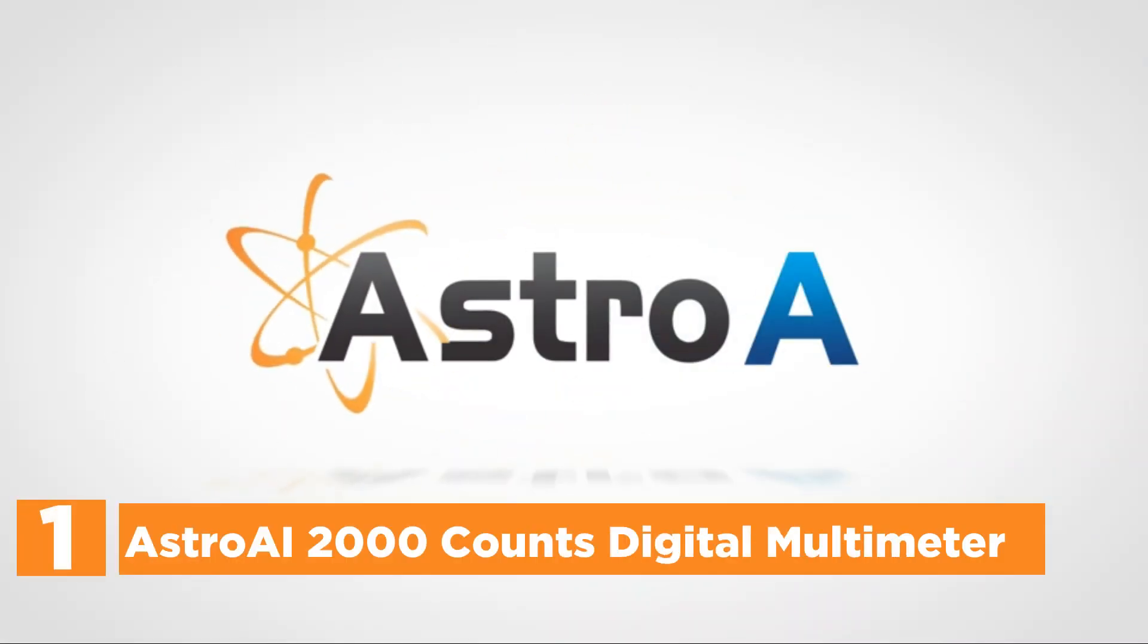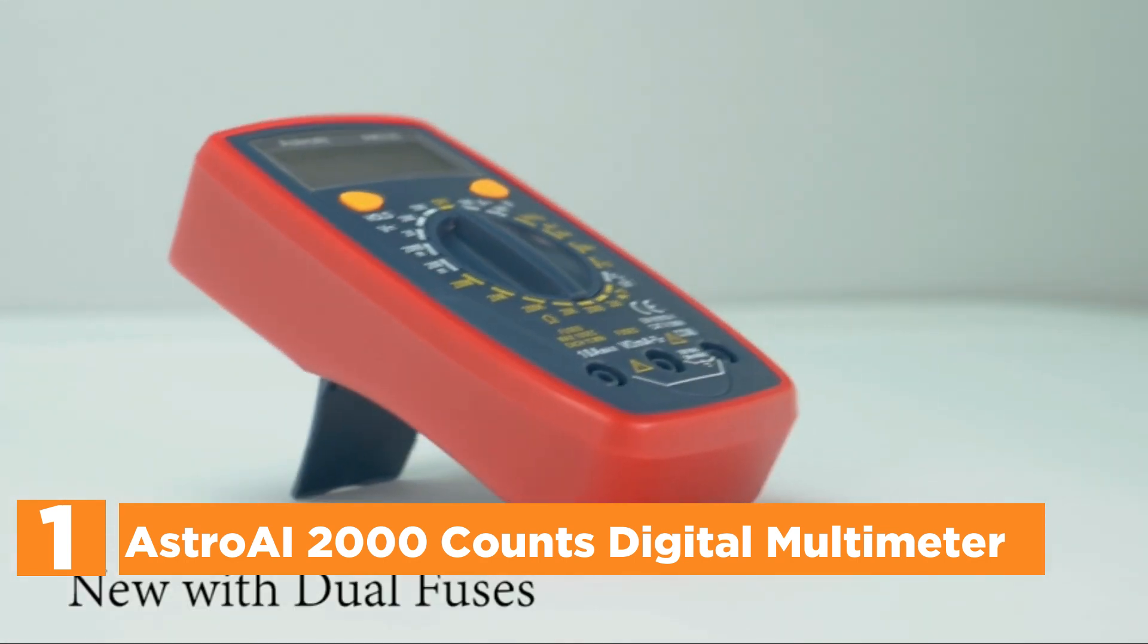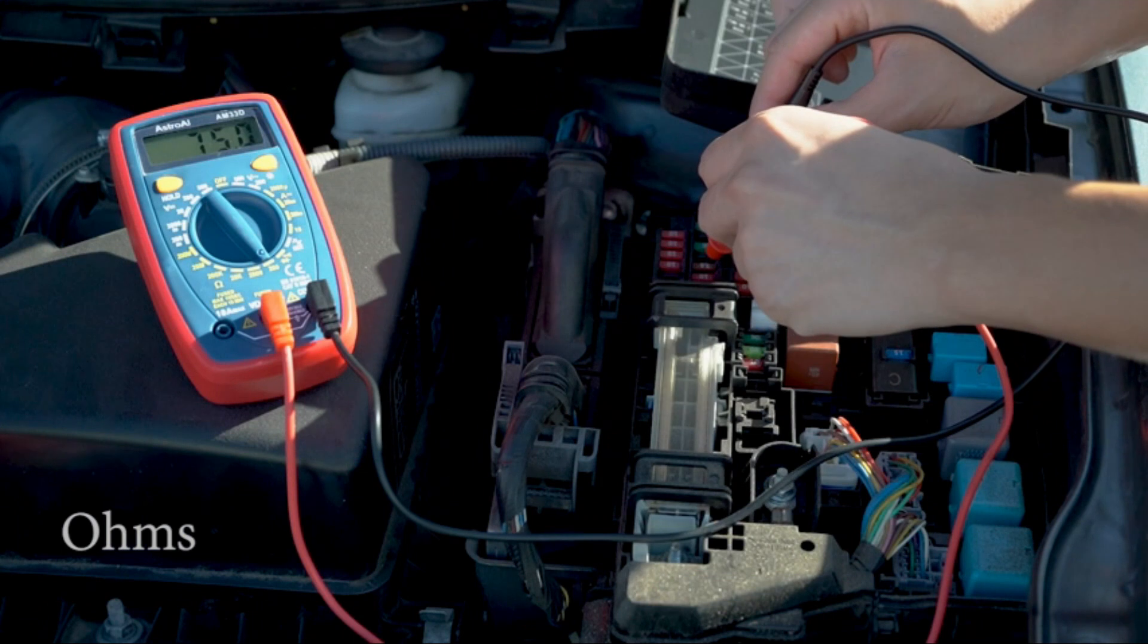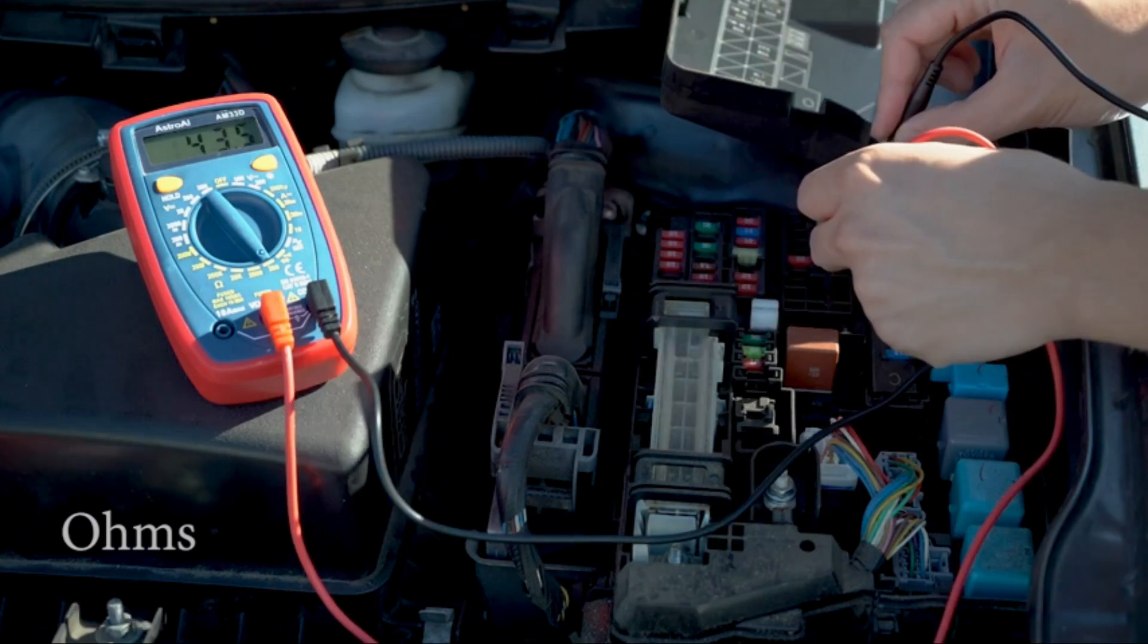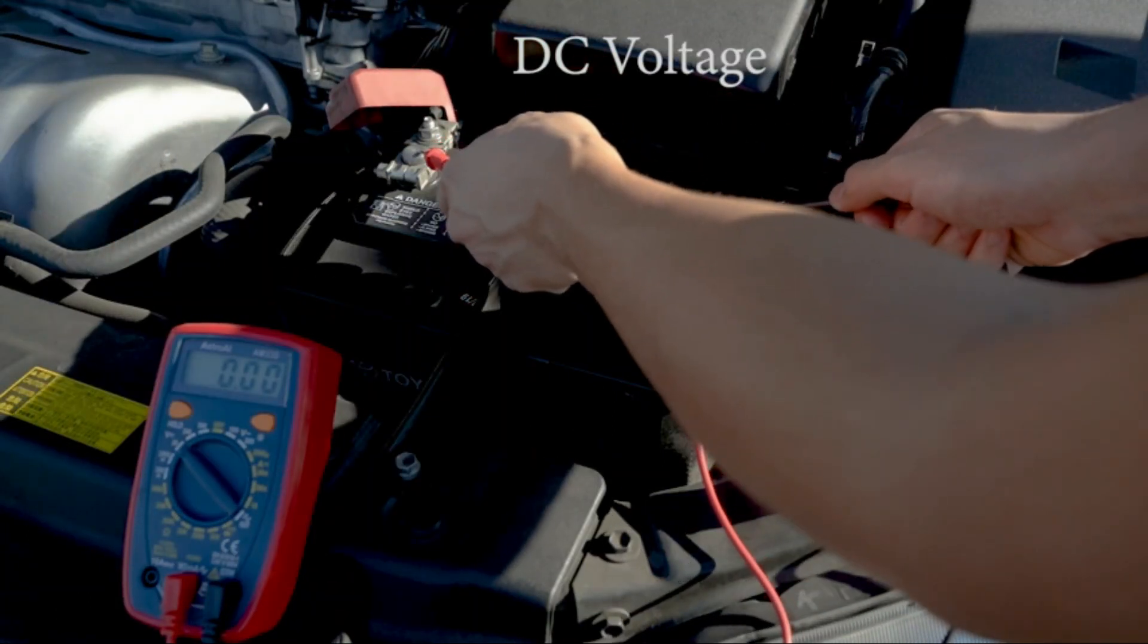The top one in our list, Astro-AI 2000 Counts Digital Multimeter. This multimeter comes with a sampling speed of 2 seconds at a time. The multimeter has a backlight LCD display with high polarity, including positive and negative readings.